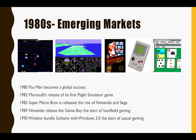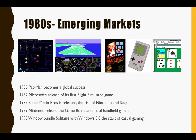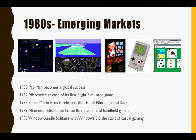In 1985, Super Mario Bros. was released, and newer companies such as Nintendo and Sega became the dominant market leaders across the next decade. In 1989, Nintendo released the Game Boy, which was really the start of handheld gaming. And in 1990, Windows bundled Solitaire with Windows 3.0, introducing millions of new computer users to digital gaming — the start of the casual gaming sector.